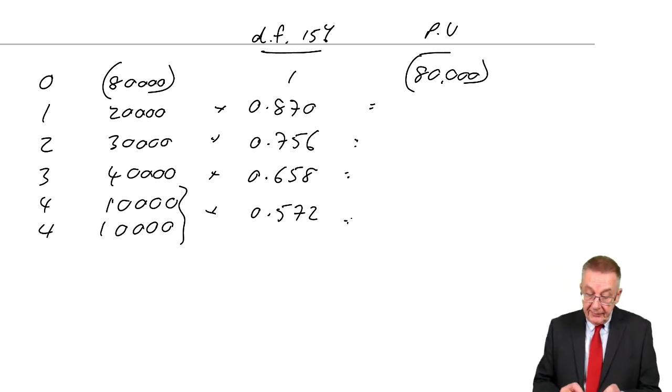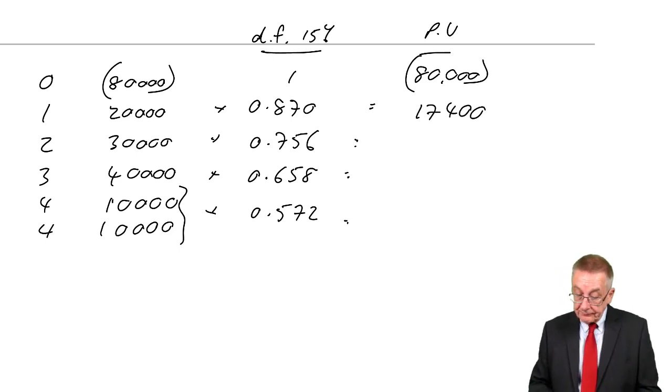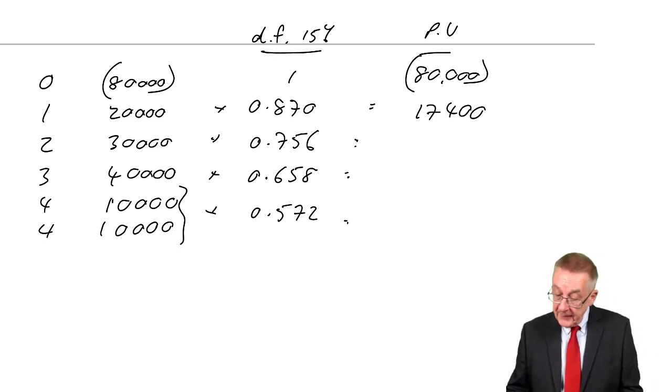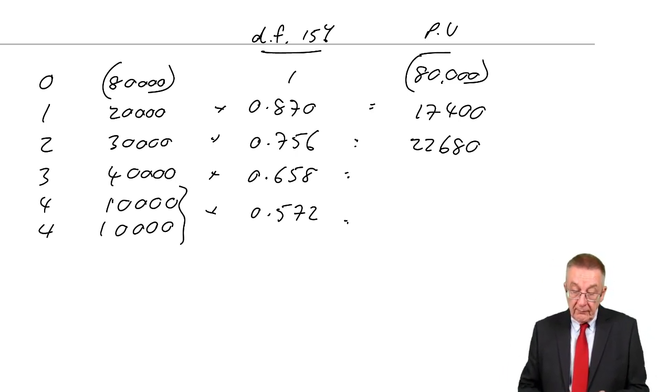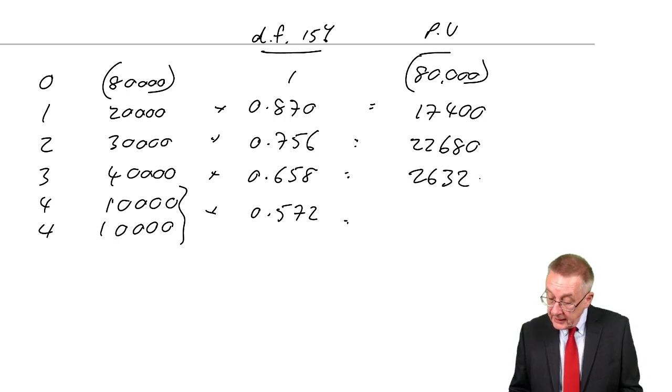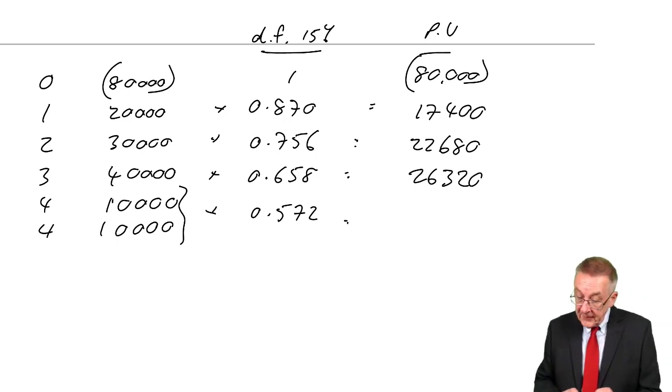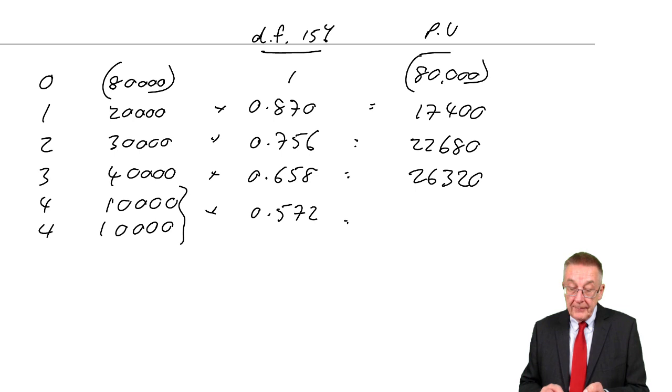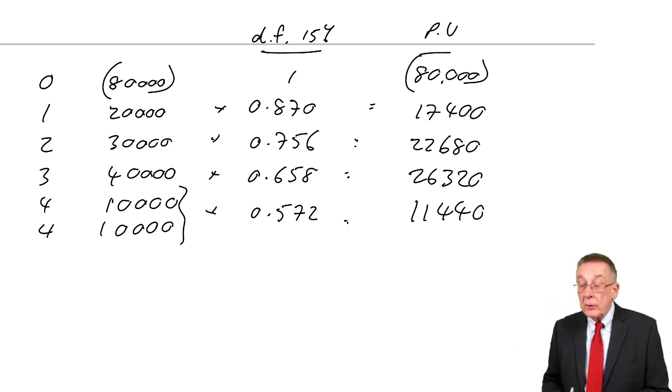One year, 0.870, two years, 0.756, three years, 0.658, 0.572. And therefore the present values, 20,000 times 0.87 is 17,400, 20,000 times 0.756 is 22,680, 26,320. And finally I'll do the two together again, a total of 20,000 in four years times 0.572 is 11,440.